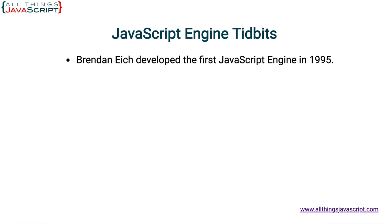The very first JavaScript engine was developed by Brendan Eich back in 1995. He developed it for the Netscape Navigator browser. He's considered the inventor of JavaScript, and he wrote the engine so that it could take instructions — which became known as JavaScript — and cause the Netscape browser to do something that wasn't possible before. That was the first JavaScript engine.